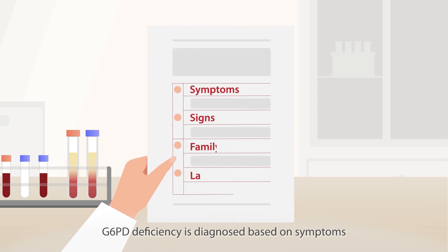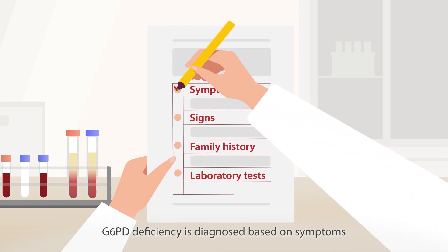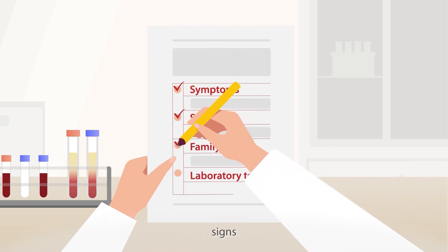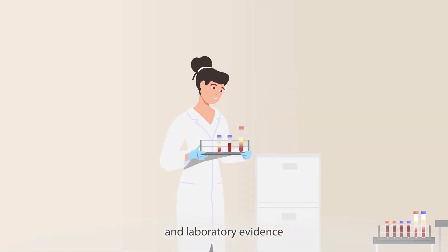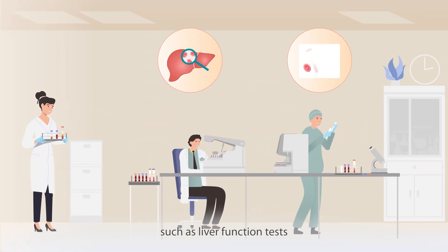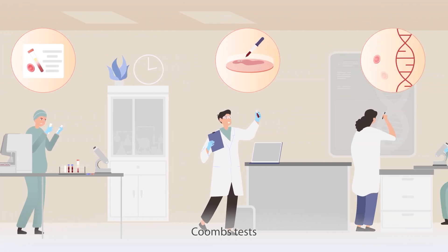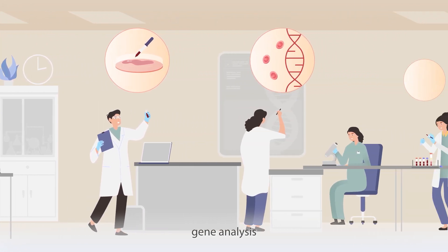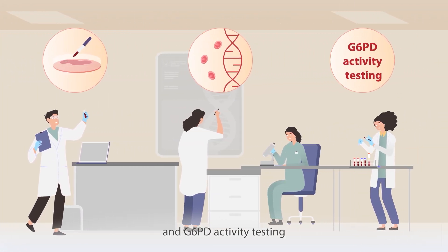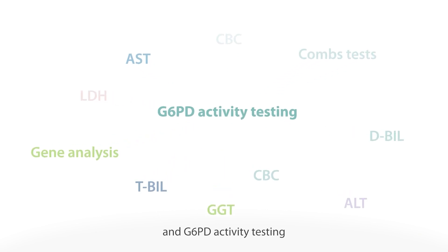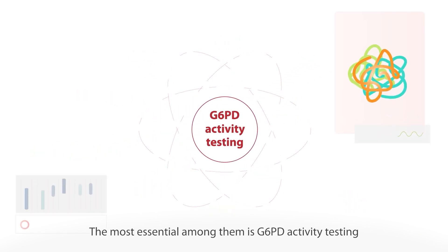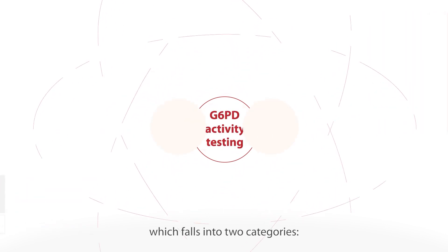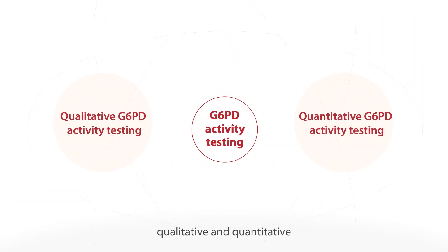G6PD deficiency is diagnosed based on symptoms, signs, family history, and laboratory evidence — such as liver function tests, blood count, Coombs tests, gene analysis, and G6PD activity testing. The most essential among them is G6PD activity testing, which falls into two categories: qualitative and quantitative.